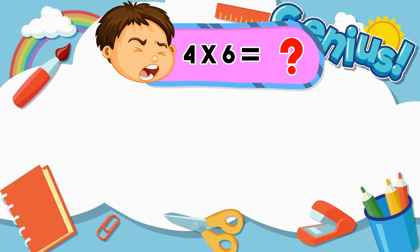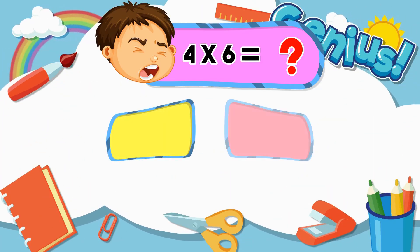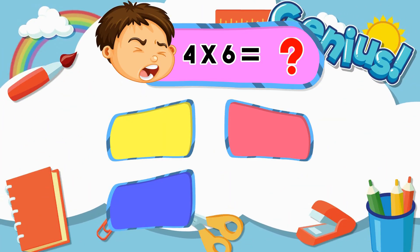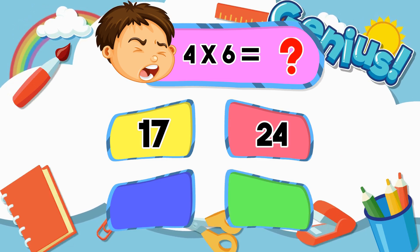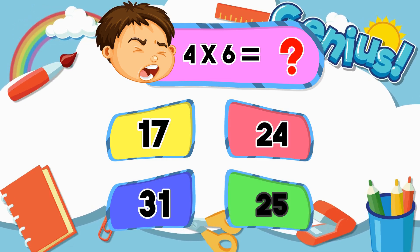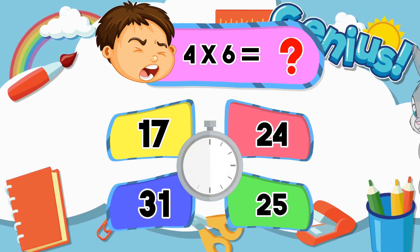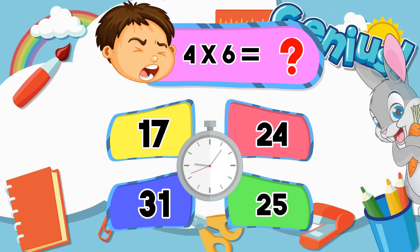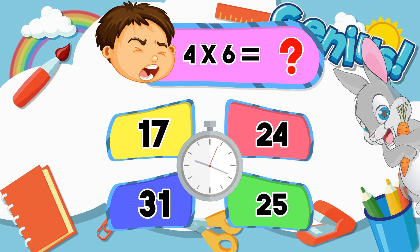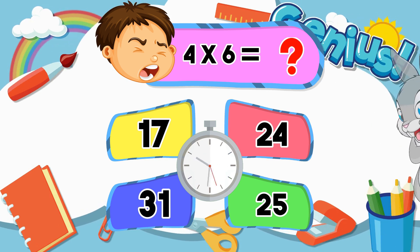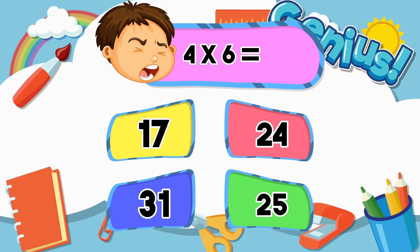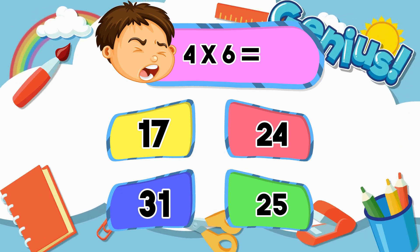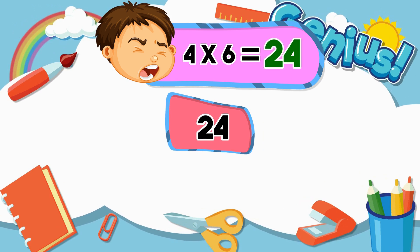What is 4 times 6? Options: 17, 24, 25. The correct answer is 24.